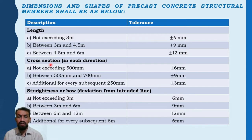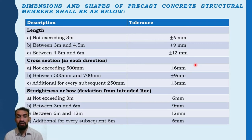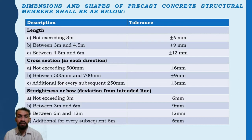For cross-section in each direction: not exceeding 500 mm — plus or minus 6 mm; between 500 mm and 700 mm — plus or minus 9 mm. For each additional subsequent 250 mm, plus or minus 3 mm is to be considered.